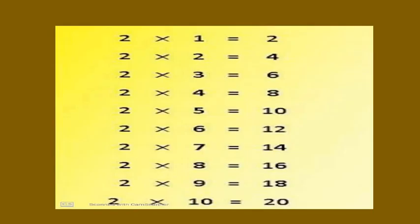This is the table of two. Two one the two. Two two the four. Two three the six. Two four the eight. Two five the ten. Two six the twelve. Two seven the fourteen. Two eight the sixteen. Two nine the eighteen. Two ten the twenty.